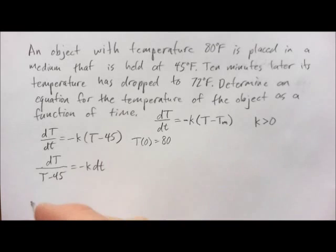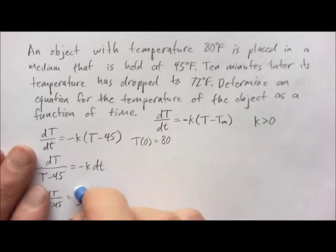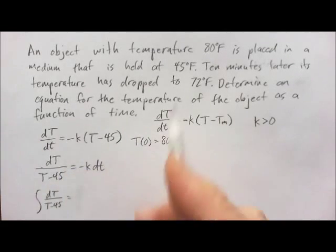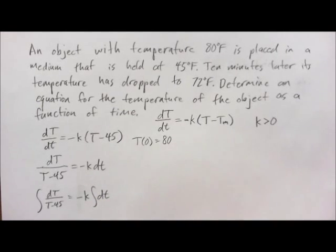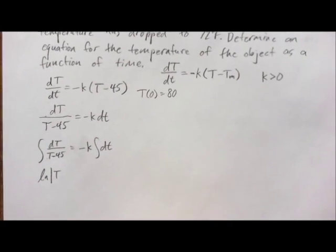So, we end up with dT, the differential for temperature, over capital T minus 45 equals negative K dt differential of time. And so, we then integrate both sides of this. And since that K is a constant, we can bring it out of the integral. So, let's have negative K integral of the differential with respect to time. This side over here, since the number in front of capital T is 1, simply 1,